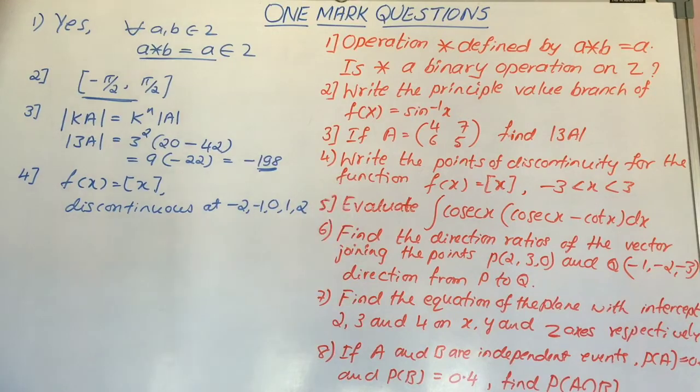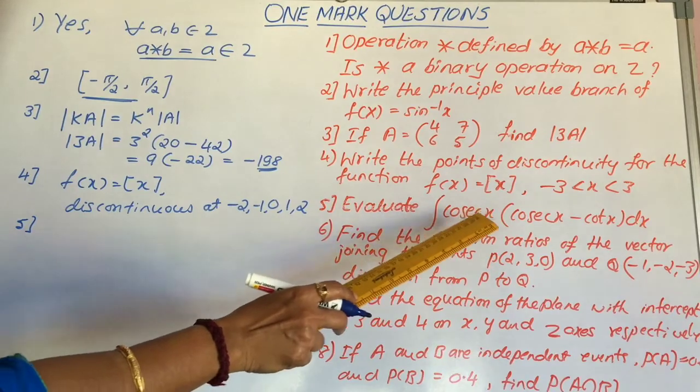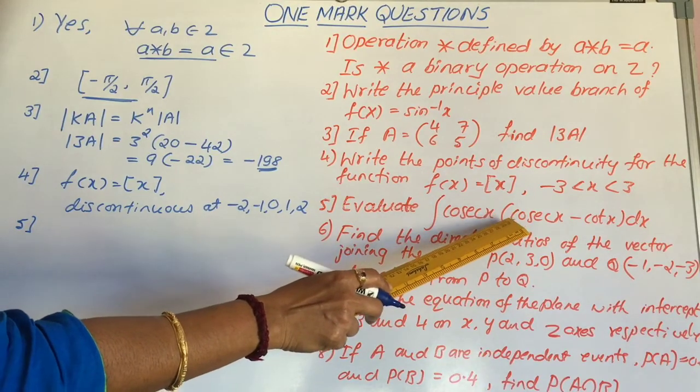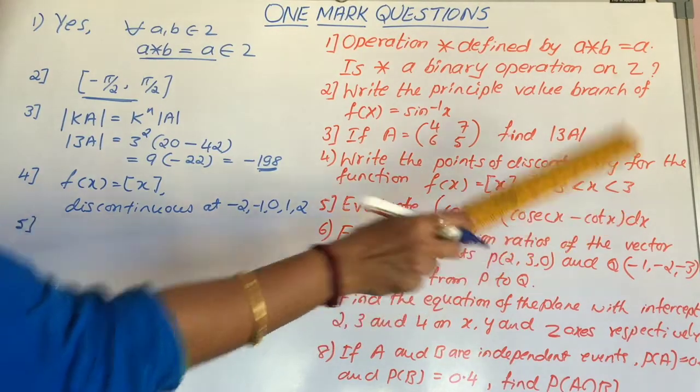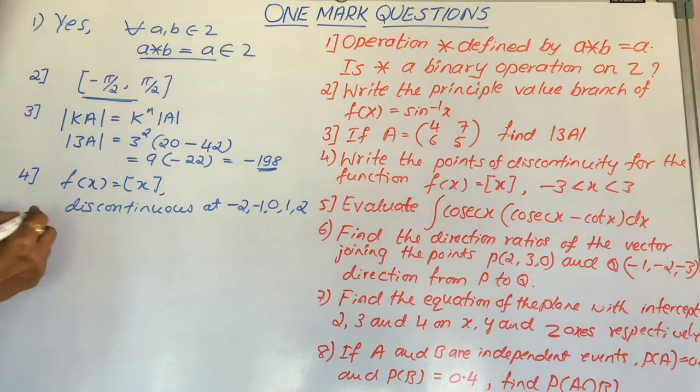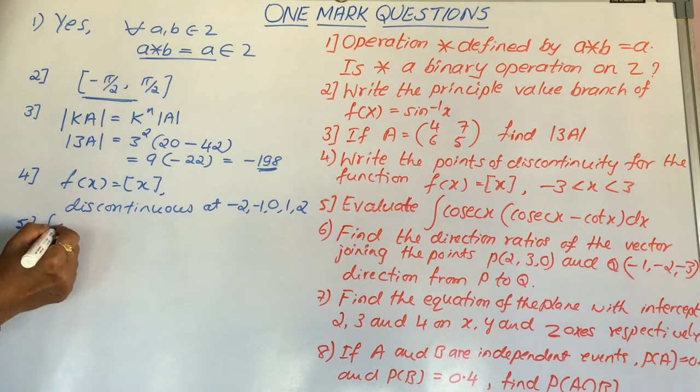Consider next question. Question number 5. Evaluate integral cosecant x into cosecant x minus cotangent x dx.